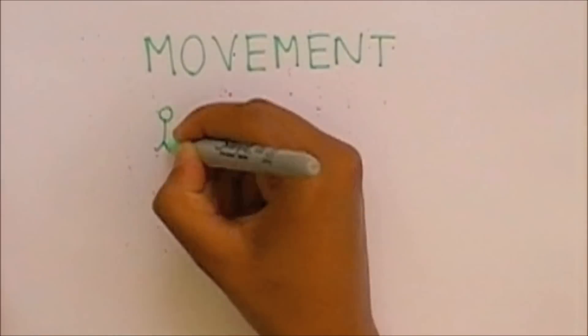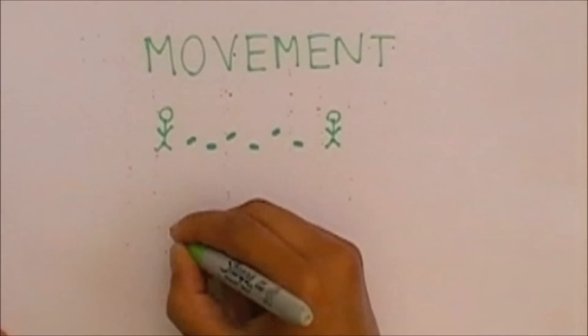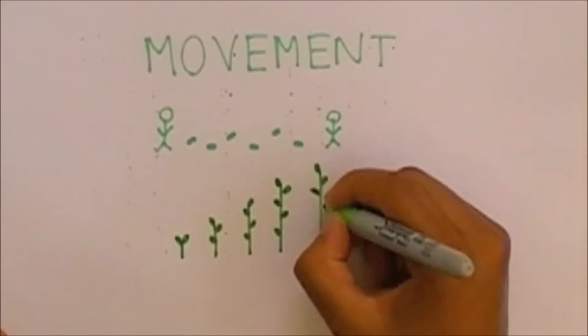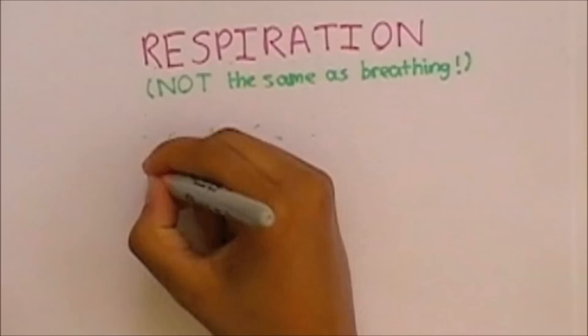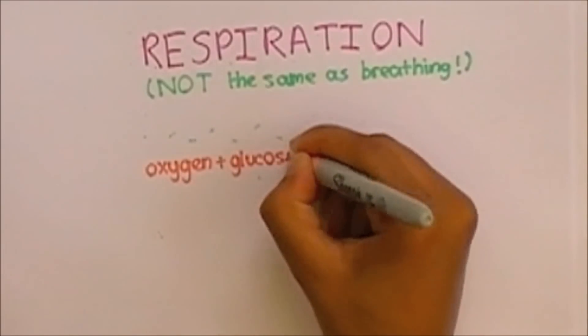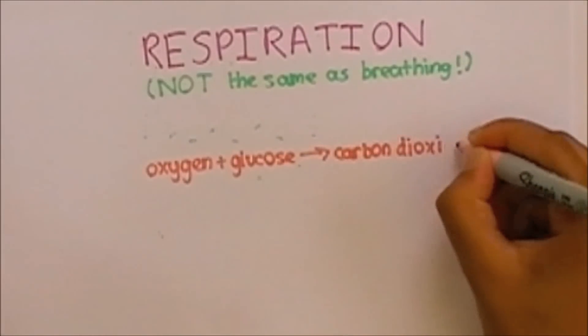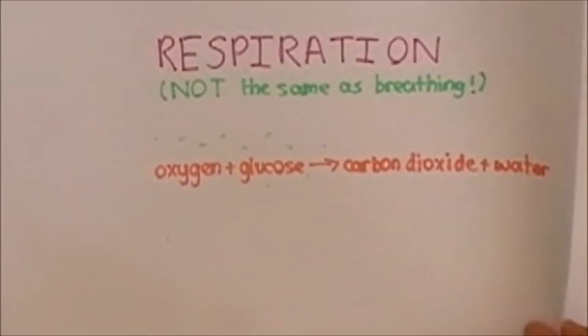Movement may be moving from place to place as animals do or the growth movements of plants in response to a stimulus. Respiration is the release of energy from food molecules and it takes place inside all living cells. Respiration can be summarized by the equation oxygen plus glucose equals carbon dioxide plus water.